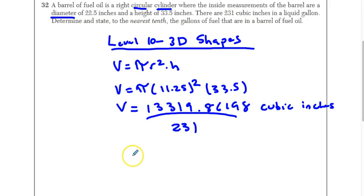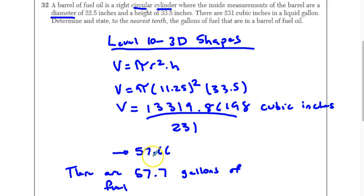And we should get the volume, sorry, so we get 57.66, all right? Now, the question says, determine to the nearest tenth how many gallons of fuel there are, so this is what we got, 57.66, we're going to say there are 57.7 gallons of fuel. And that will get you four points.